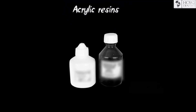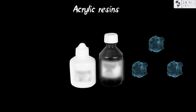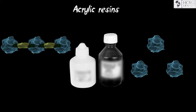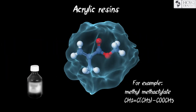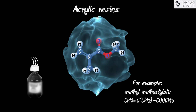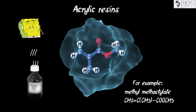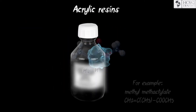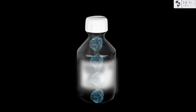Acrylic resins are usually represented in powder and liquid form. The liquid is presented in the form of monomers, and the powder in the form of a polymer. A monomer is a structural unit of a polymer. All acrylate monomers are volatile and smell sharply, especially methacrylate. They are very active and constantly strive to polymerize.